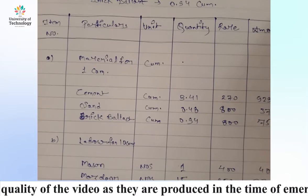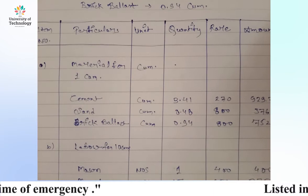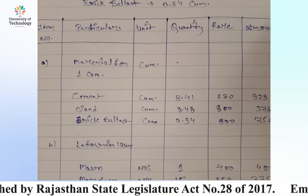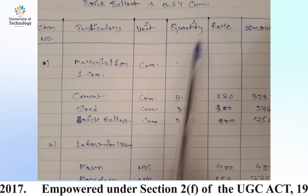Now this table — you can see it. Because if you want to see the rate and analyze the rate, then you have to make a table. The table has columns: item number, particulars, unit, quantity, rate, and amount.